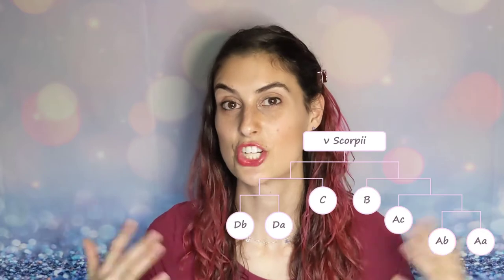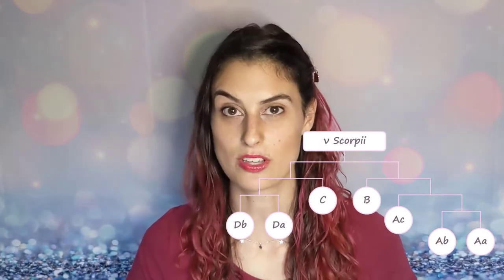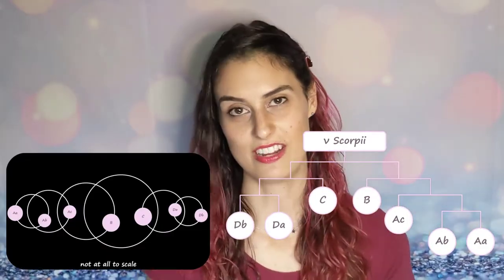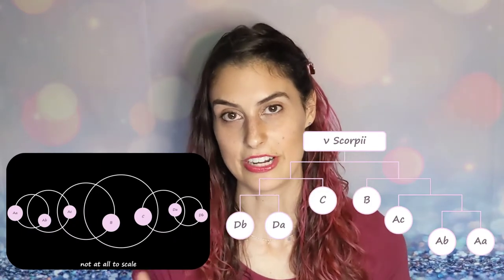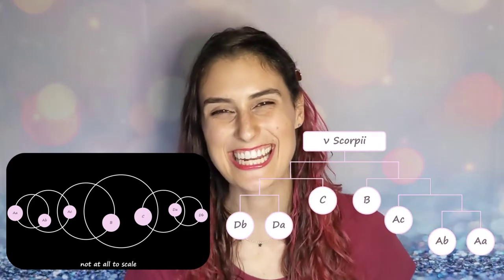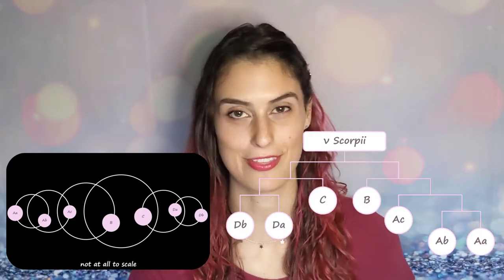One septuple system is AR Cassiopeiae and one is Nu Scorpii. There's a diagram showing the hierarchical configuration of Nu Scorpii - you can see which ones are in close orbits with each other, and then that pair is in an orbit with another, and so on. The bracket representation is a bit easier to understand than looking directly at the orbits. Higher multiplicities than seven are theoretically possible - octuple, nonuple systems - we just have never seen any of them.